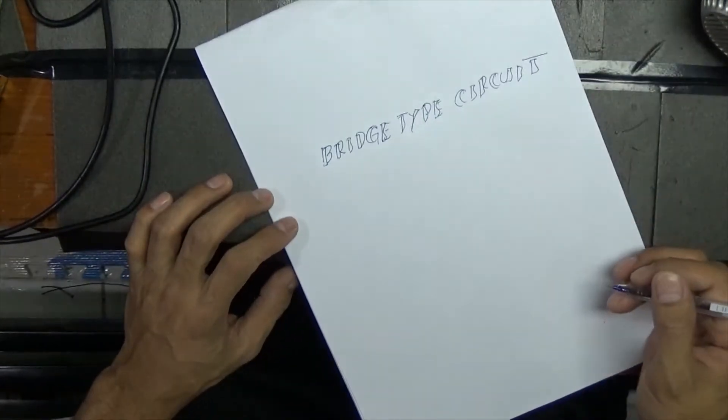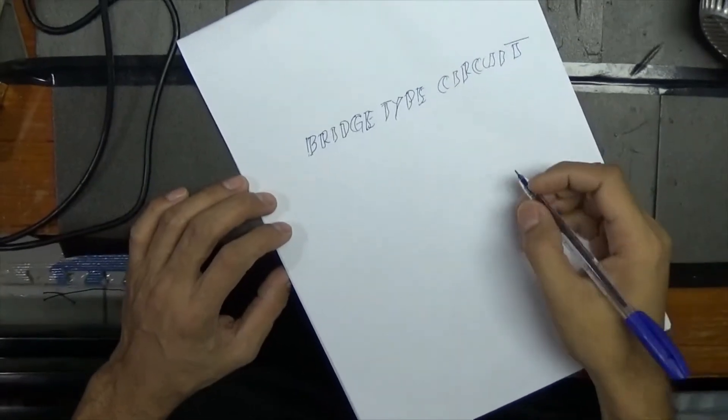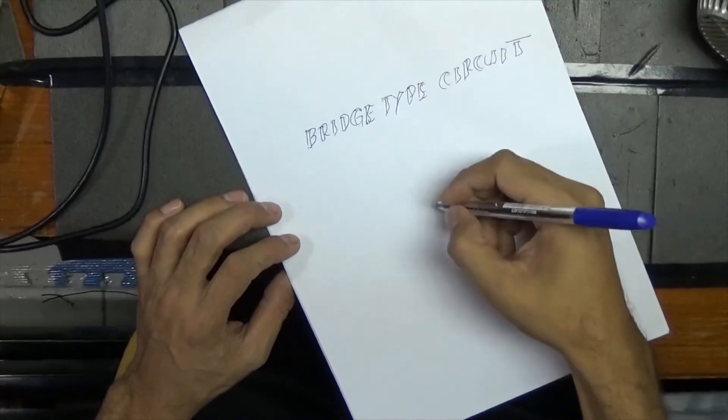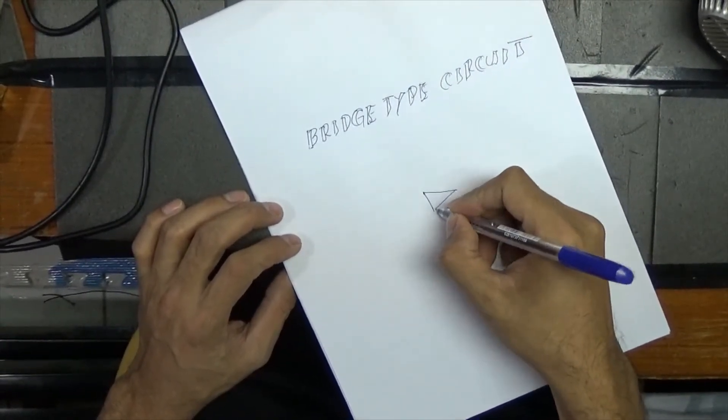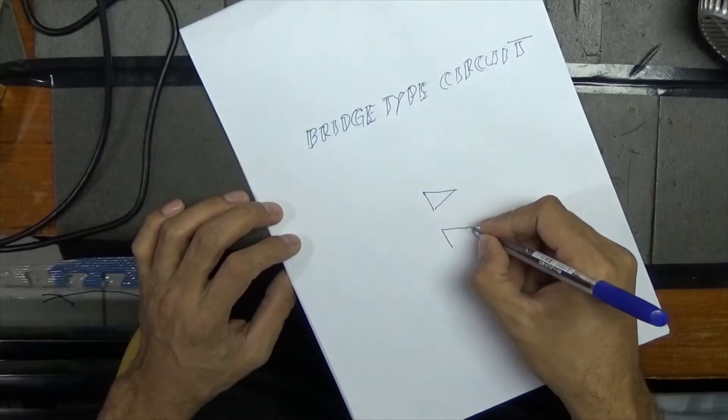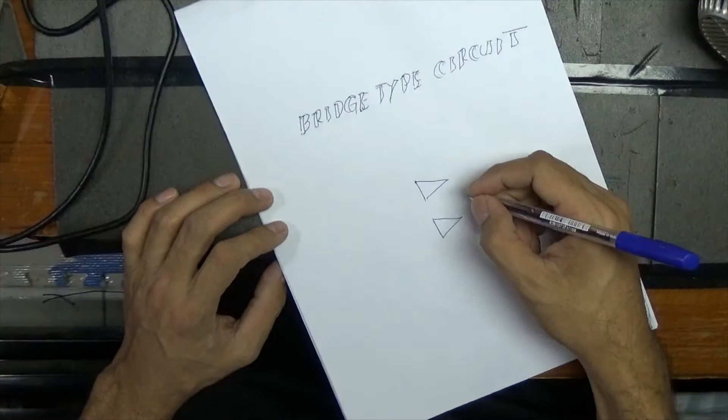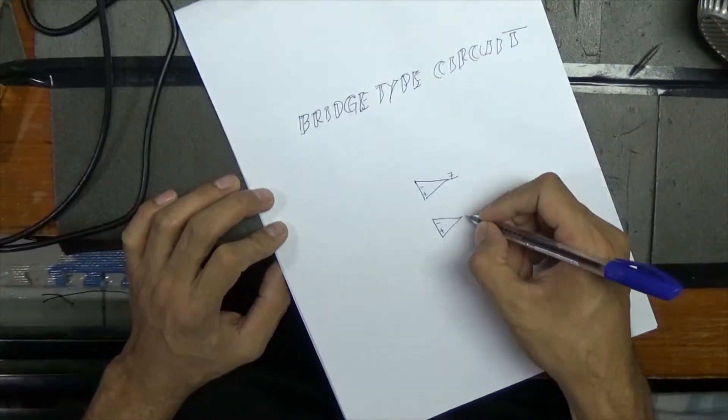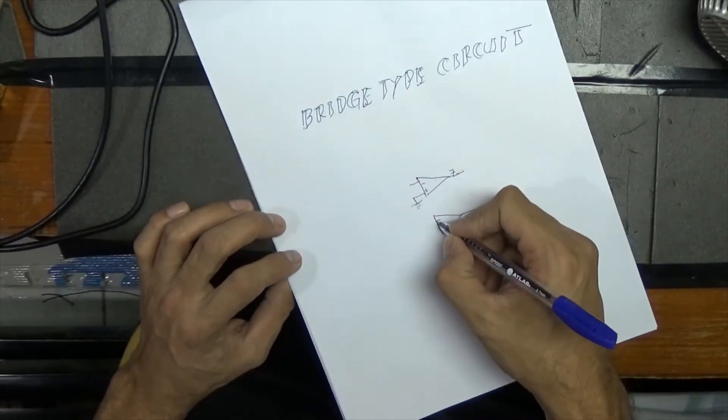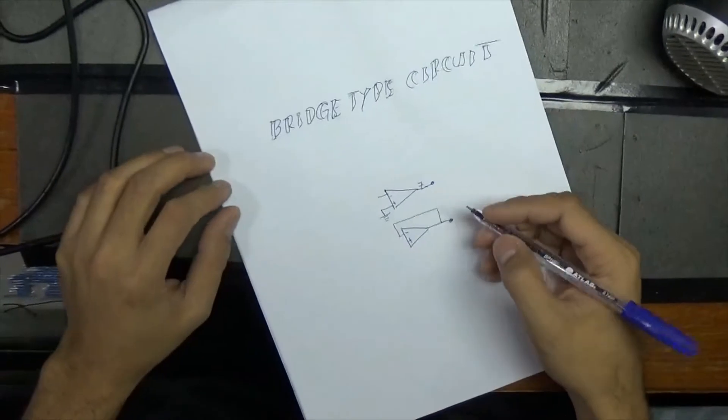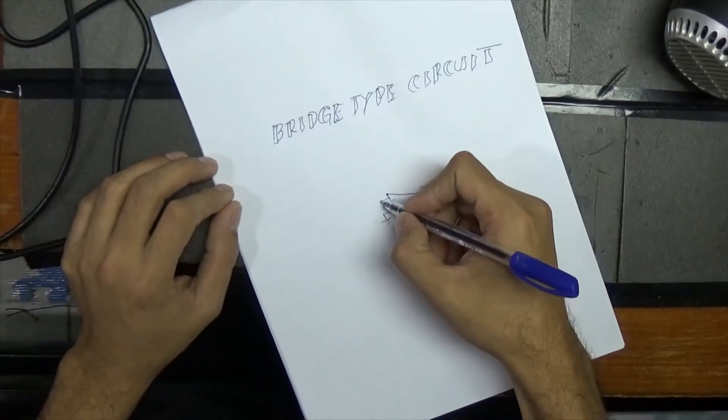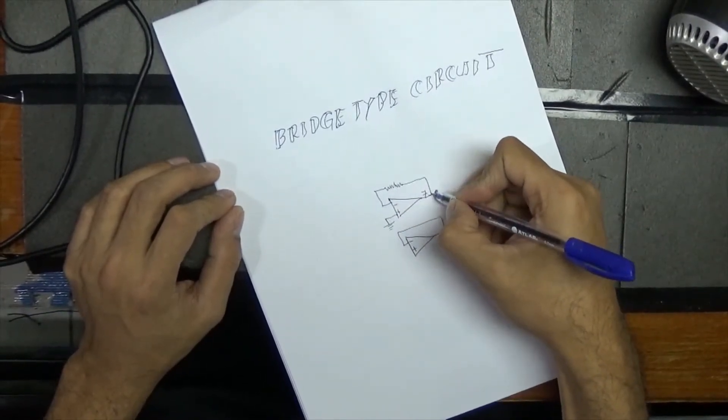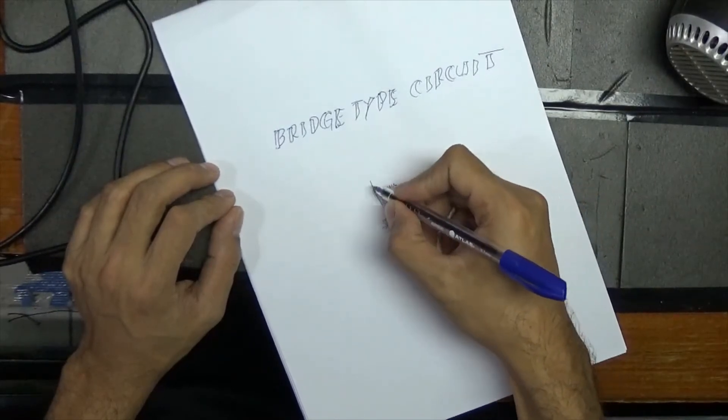Bridge type circuit. This is a very simple circuit that makes your amplifier powerful. On my next video I will show you how it works.